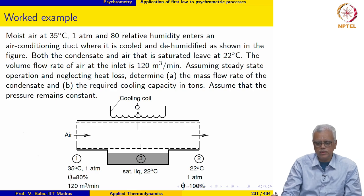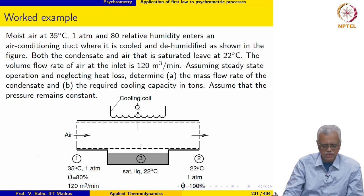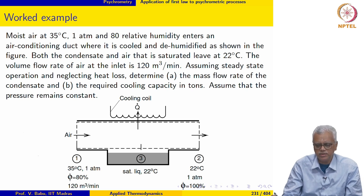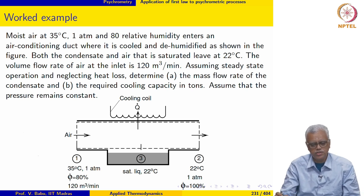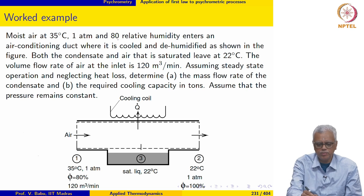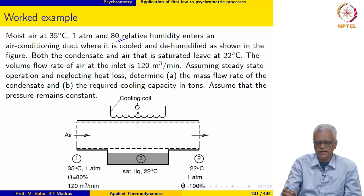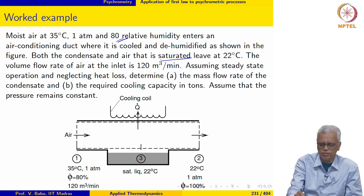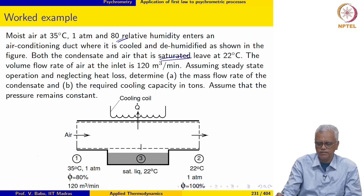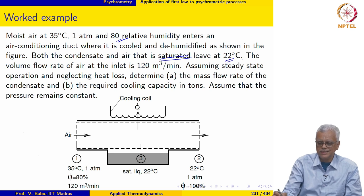The next example involves dehumidification. The problem statement reads: moist air at 35°C, 1 atmosphere, and 80% relative humidity enters an air conditioning duct where it is cooled and dehumidified. Both the condensate and the air leaving are saturated — the air leaves fully saturated at 22°C.